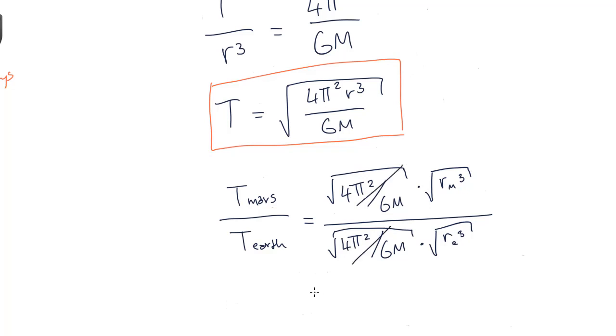If we compare the period of Mars to the period of Earth, we see that most of the variables will cancel. And we're left with period of Mars is equal to the square root of the distance from Mars to the Sun, cubed, divided by the distance from the Earth to the Sun, cubed.